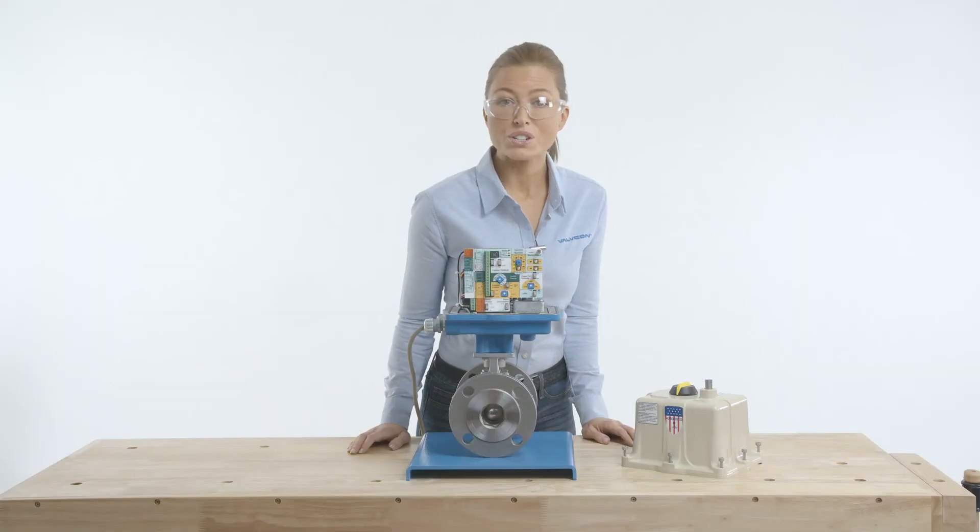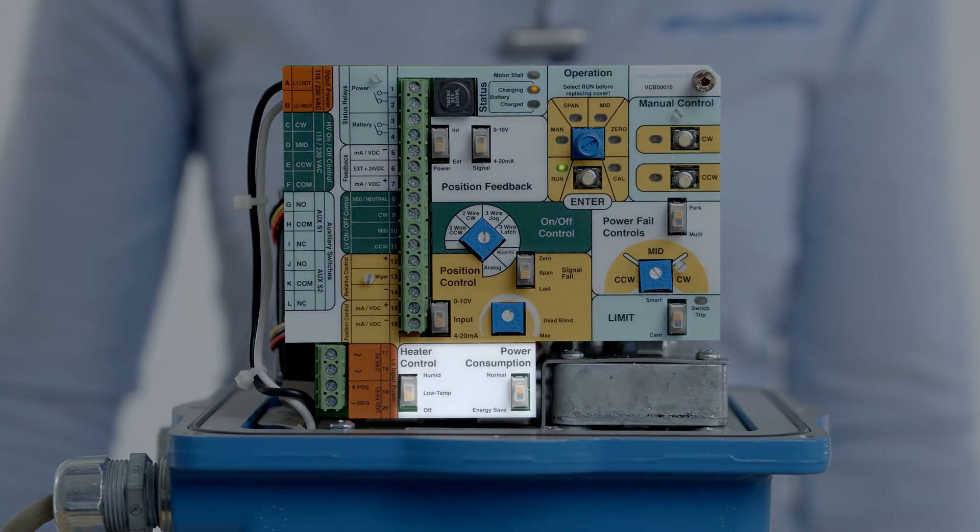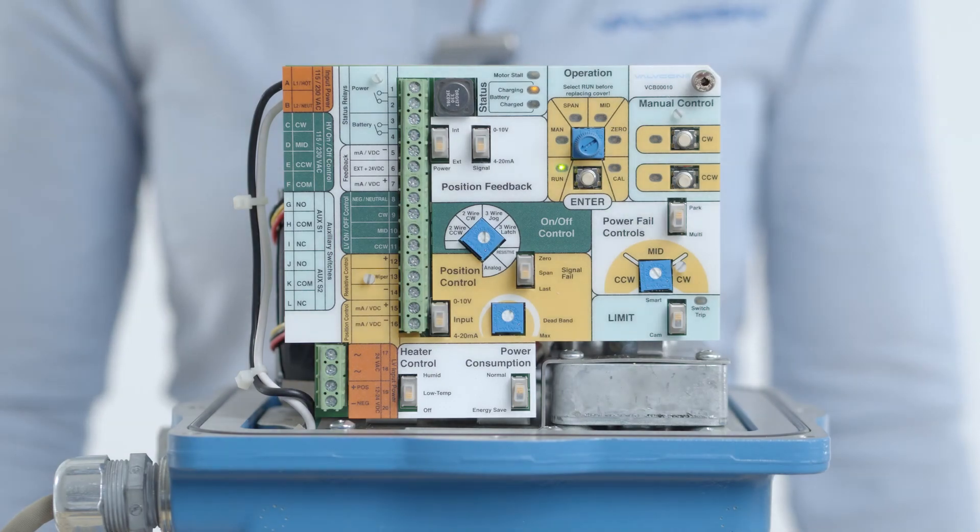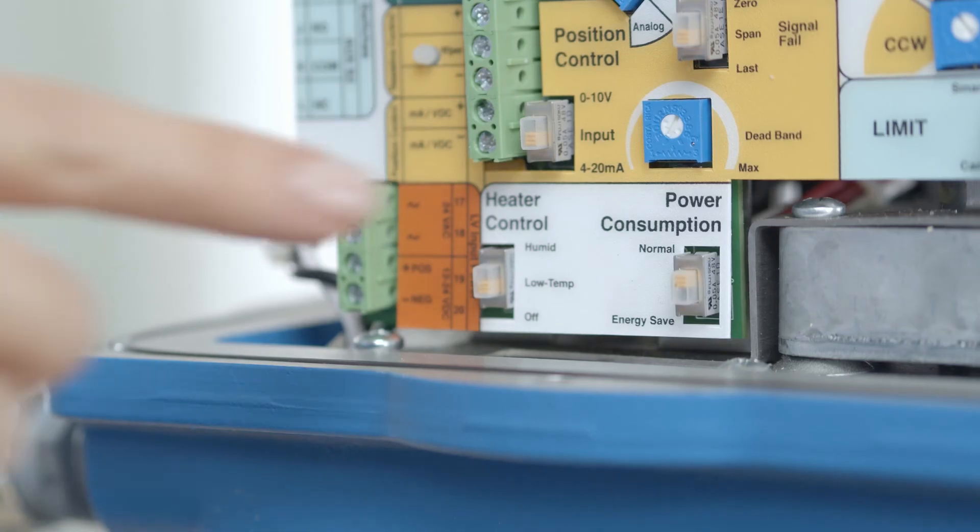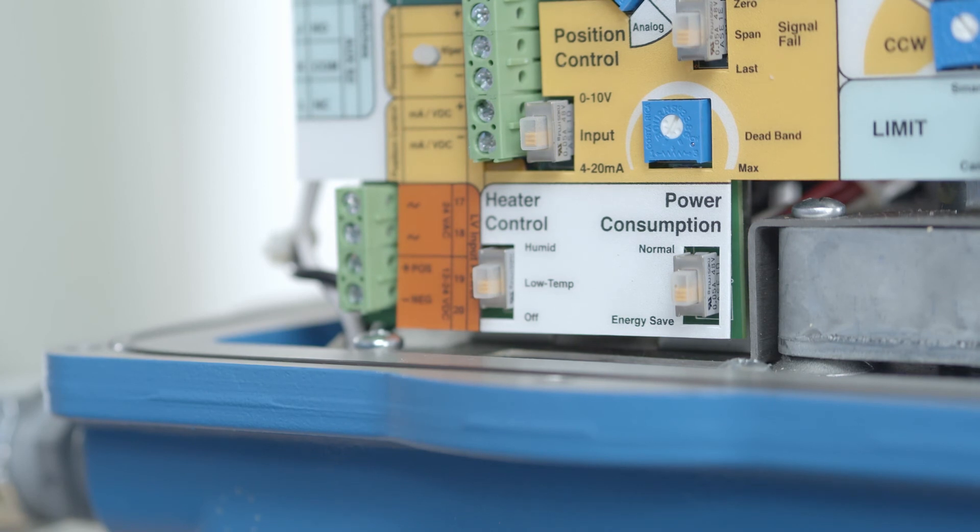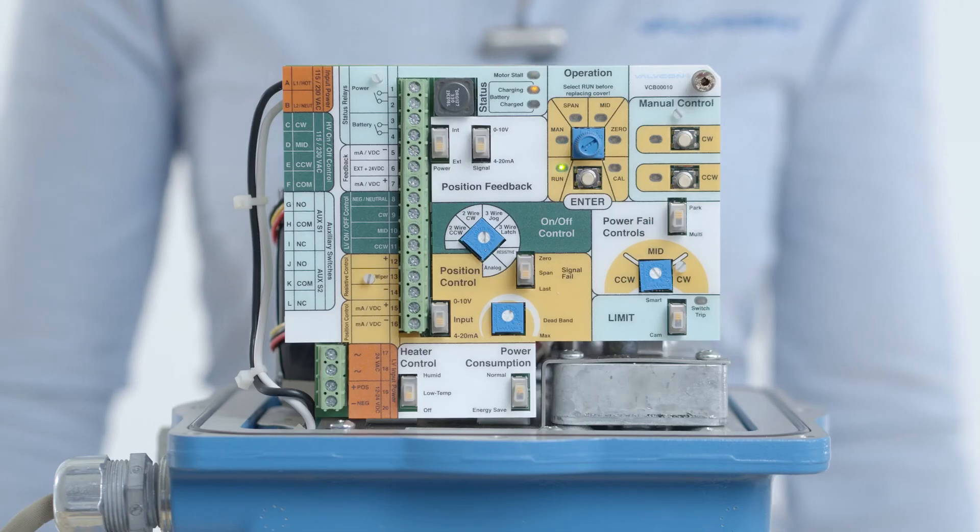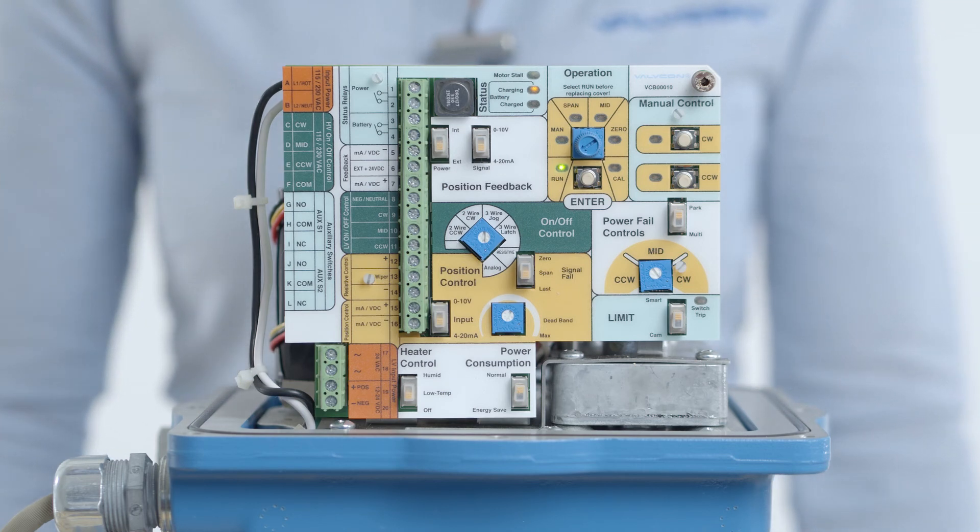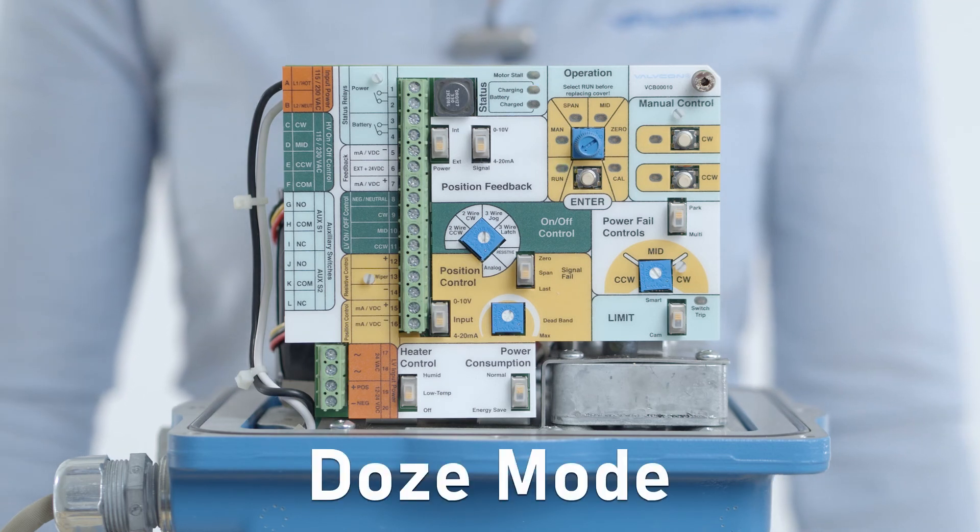There is also a power consumption feature which includes normal and energy save modes. Normal mode, up on the selector switch, is selected by default prior to shipment. Energy save mode, down on the selector switch, can be useful in remote solar applications, reducing continuous power consumption dramatically by allowing on-off configured units to enter a doze mode when the motor is not driving.